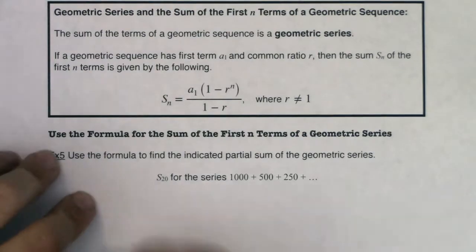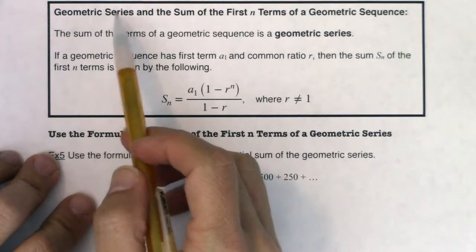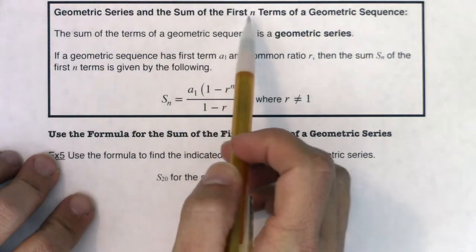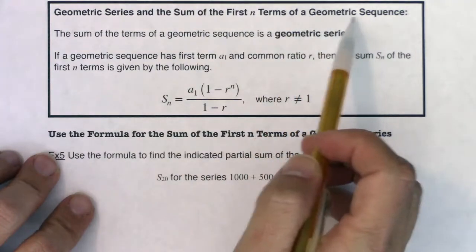Hey Math 31, welcome to example 5. We're going to take a look at geometric series and the sum of the first n terms of a geometric sequence.